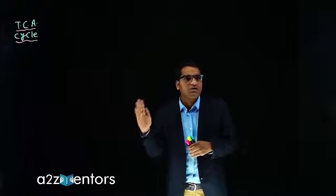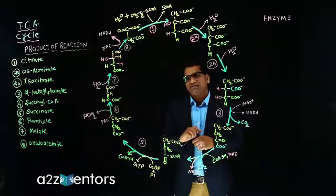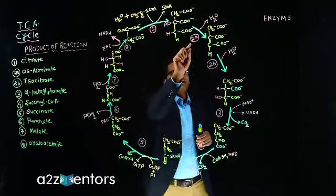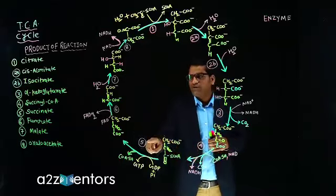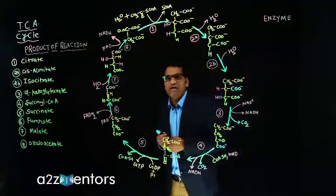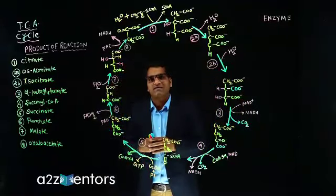In previous lectures we covered the introduction and overview of basic knowledge. Today we will very easily see what exactly are the eight standard steps in TCA cycle or Krebs cycle. These are all eight standard steps of TCA cycle: 1st, 2nd (which we will study in two subsets 2A and 2B), 3rd, 4th, 5th, 6th, 7th and 8th step. Each step is catalyzed by a different enzyme.